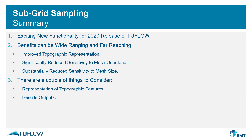To summarize, subgrid sampling is exciting new functionality made available within the 2020 release of TwoFlow, specifically the TwoFlow HPC solver, and is also compatible with the TwoFlow quadtree functionality. It is very simple to implement — just a single command in most instances — and its benefits are wide ranging: improved topographic representation, significantly reduced sensitivity to mesh orientation, and reduced sensitivity to mesh size. When applying subgrid sampling, consider the representation of topographic features such as embankments which may block flow, and also consider the mapping output requirements at the beginning of the study. Thanks for listening — I hope you found it useful, and happy modelling.